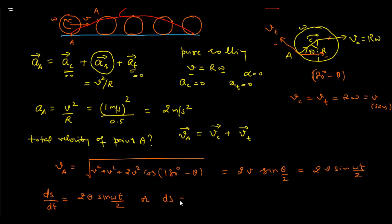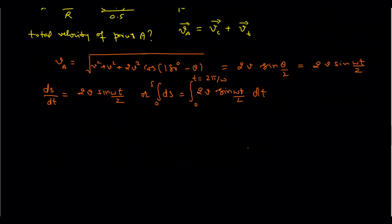Then ds = 2v·sin(ωt/2)·dt. Integrating both sides — s from 0 to s, and time from 0 to the time needed for one complete revolution, which is 2π/ω — and solving this integral, we finally get s = 8r. With r = 0.5 m, our answer is s = 4 meters. That is our answer to part B.